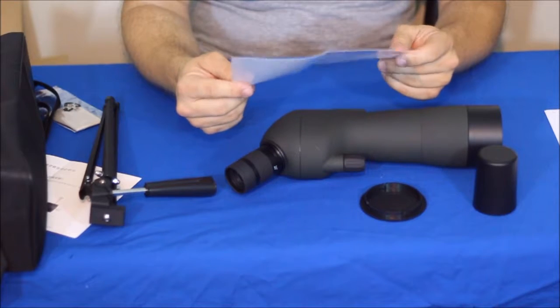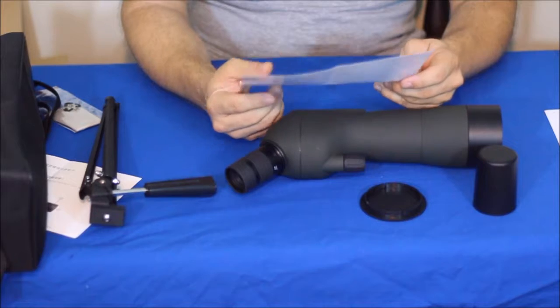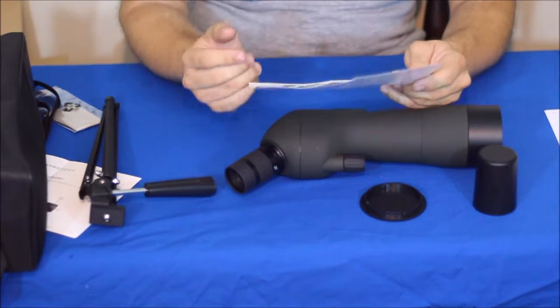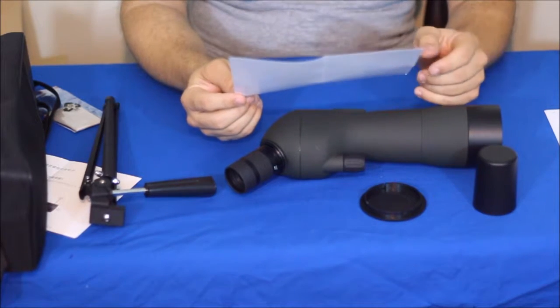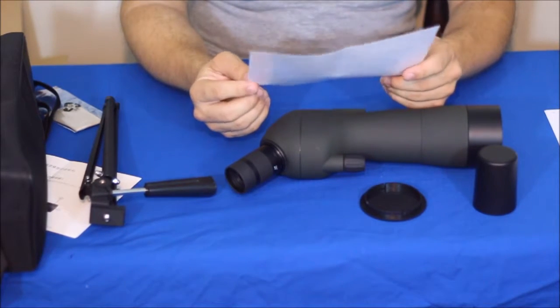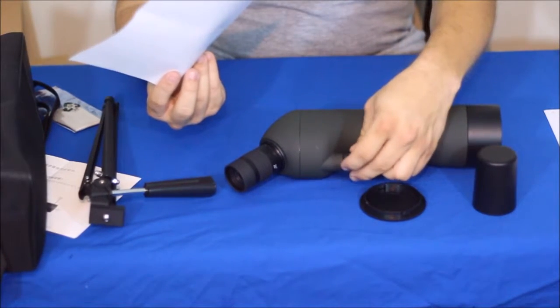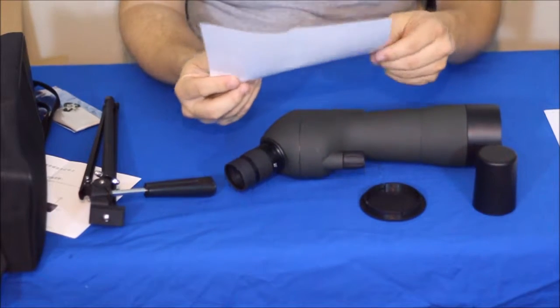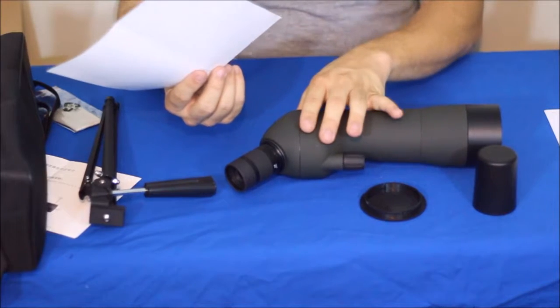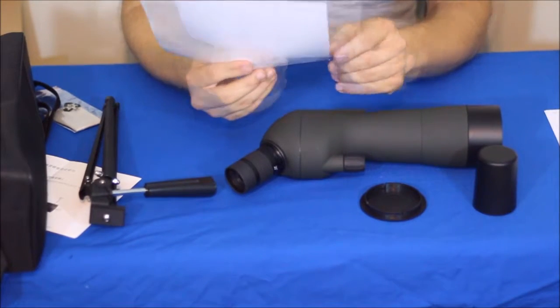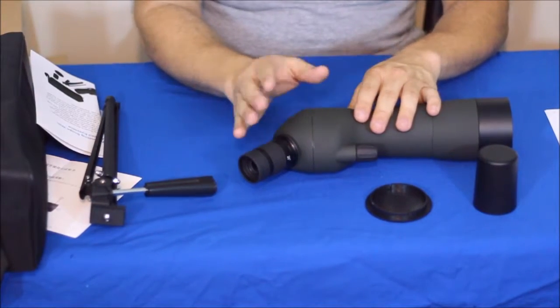The field of view at 1000 meters is 36 down to 19 meters, which is actually pretty decent. 19 meters, that's right around 20 yards, and of course the 36 will be at the 20x magnification and the 19 would be when you zoom in even further to the 60x magnification. It has an internal focusing system which is basically what the quick focus knob is. It uses a prism style focusing lens. It is nitrogen filled.